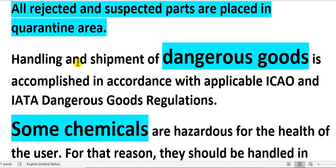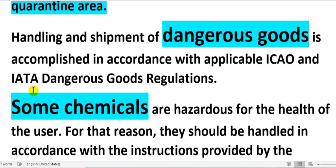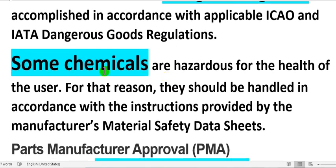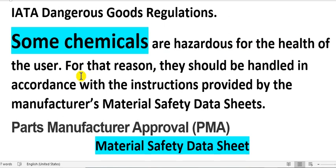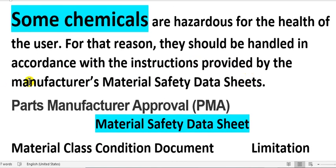Take care here: handling and shipment of dangerous goods is accomplished in accordance with the applicable ICAO dangerous goods regulations. Some chemicals are hazardous to the health of the user, and for that reason they should be handled in accordance with the instructions provided by the manufacturer — the Material Safety Data Sheet (MSDS).